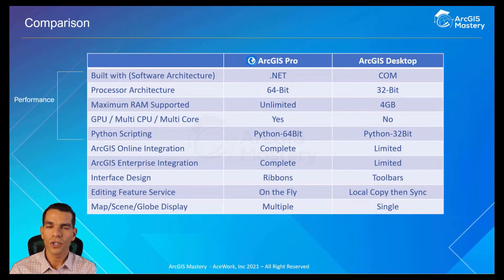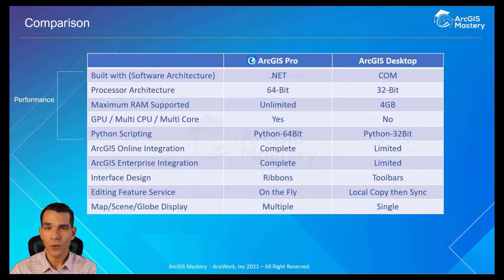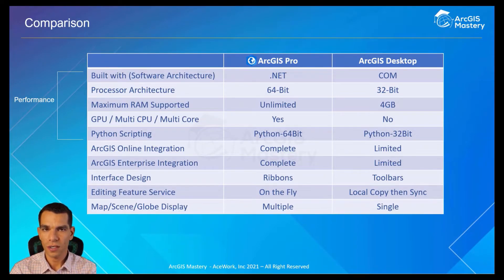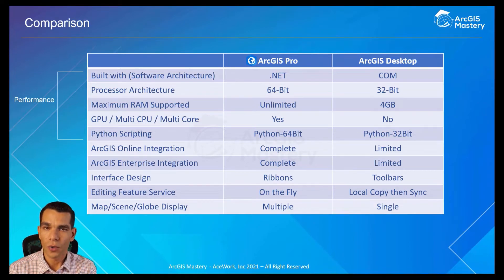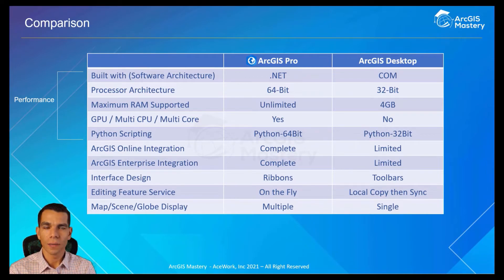With ArcGIS Pro, you also get Python 64-bit. ArcGIS Pro gives you full integration with ArcGIS Online and ArcGIS Enterprise, or Portal. There is also a difference in the design of both applications — ArcGIS Pro uses ribbons while ArcGIS Desktop uses toolbars. On ArcGIS Pro, you can edit any hosted feature service on the fly.